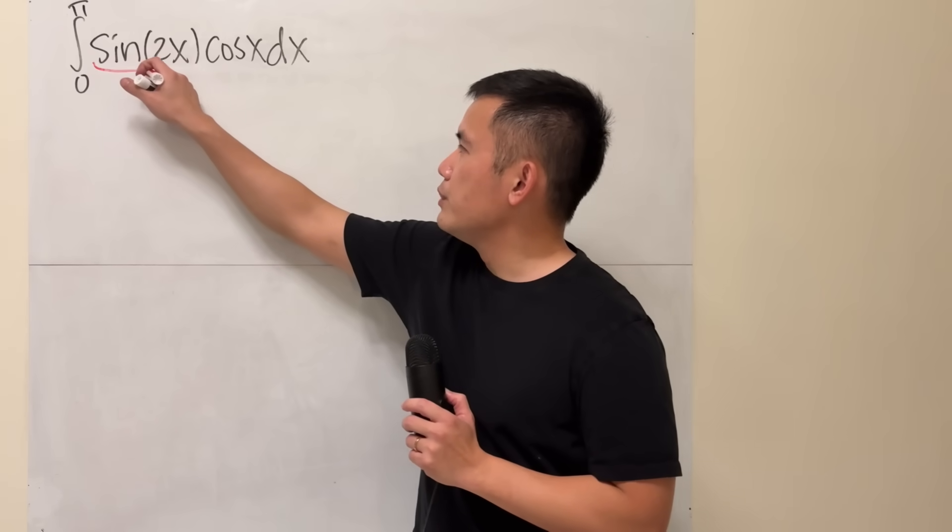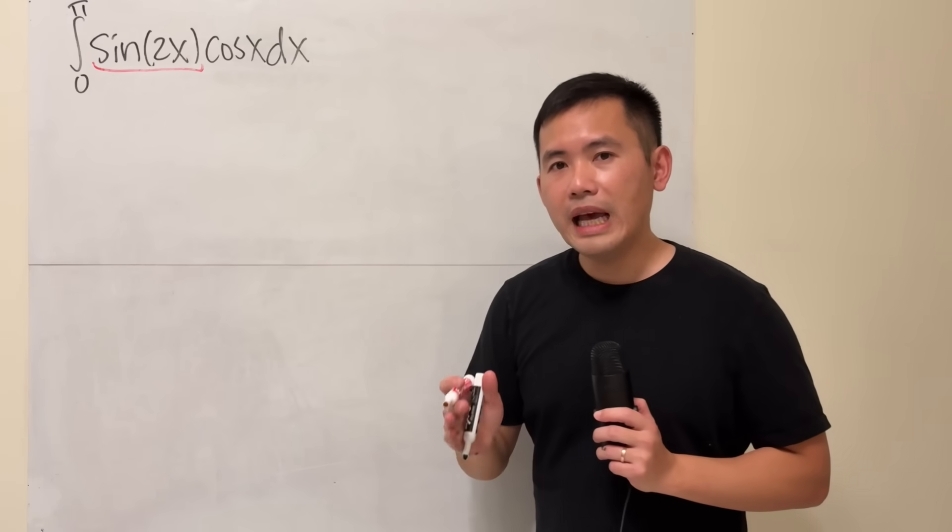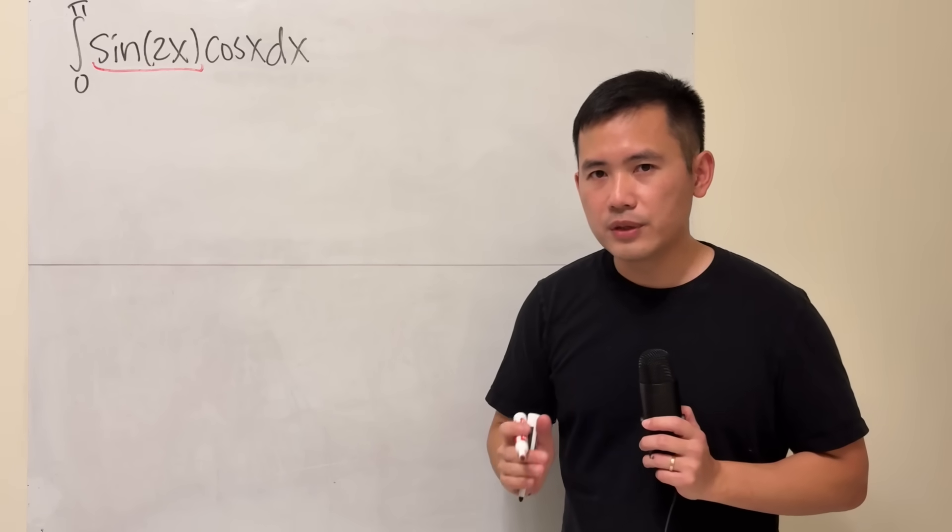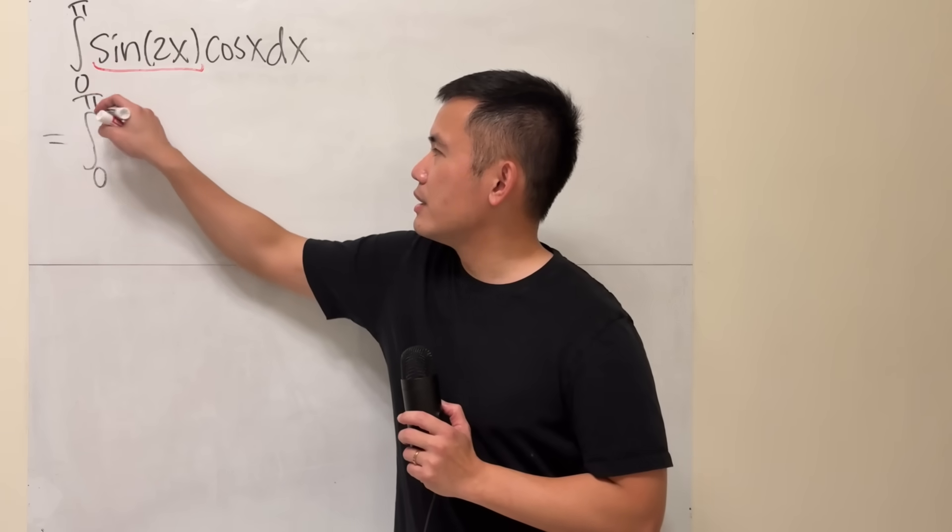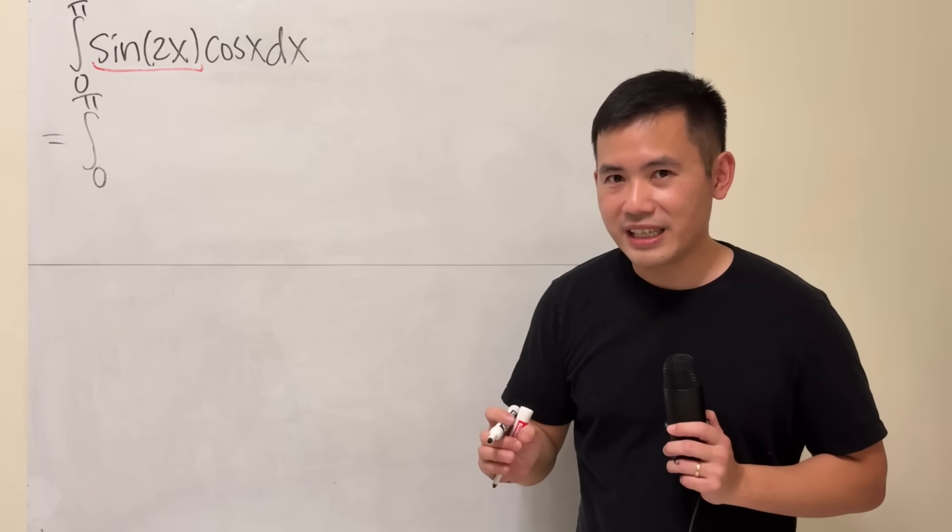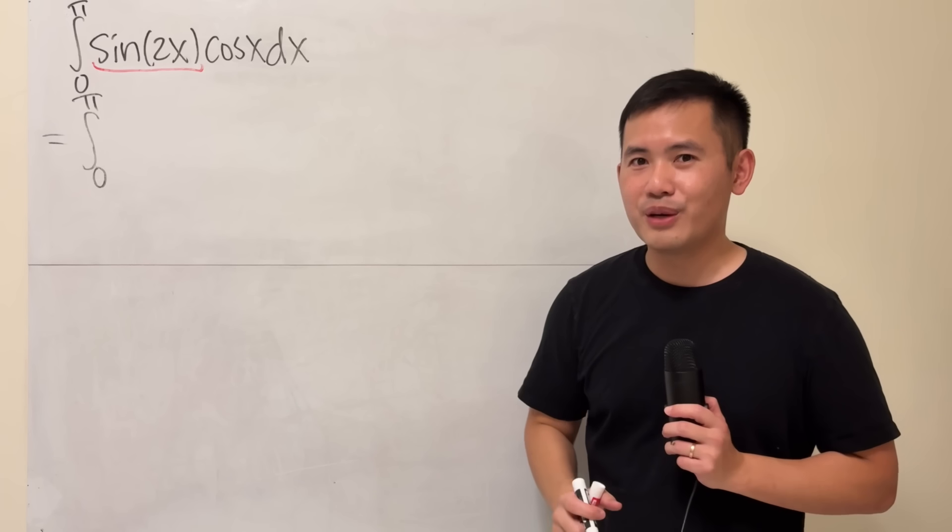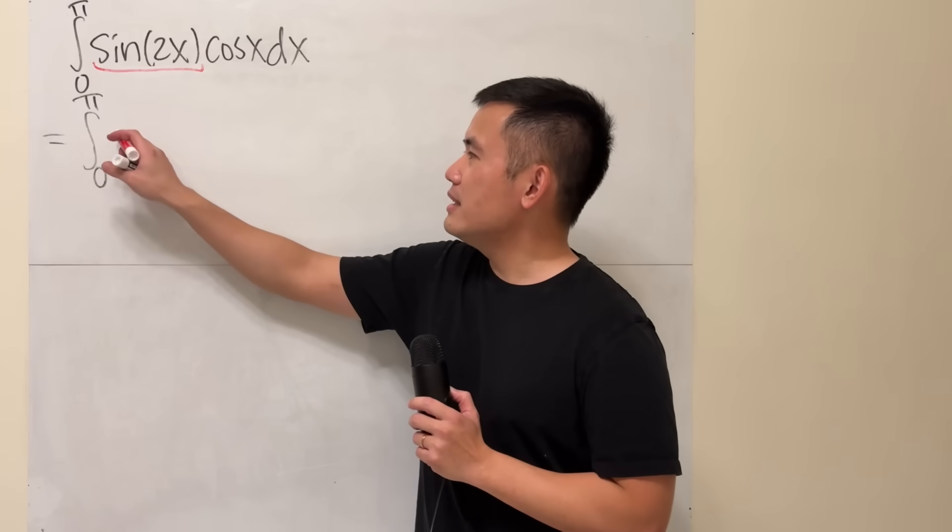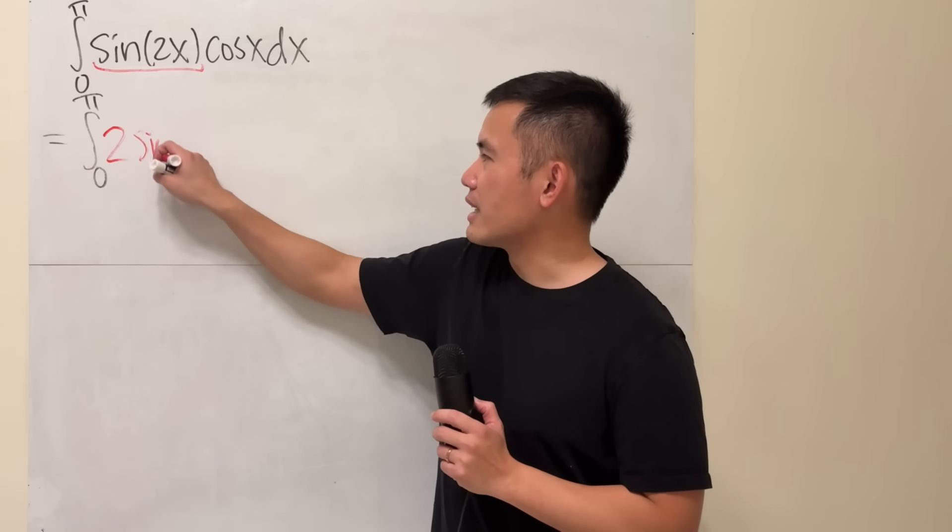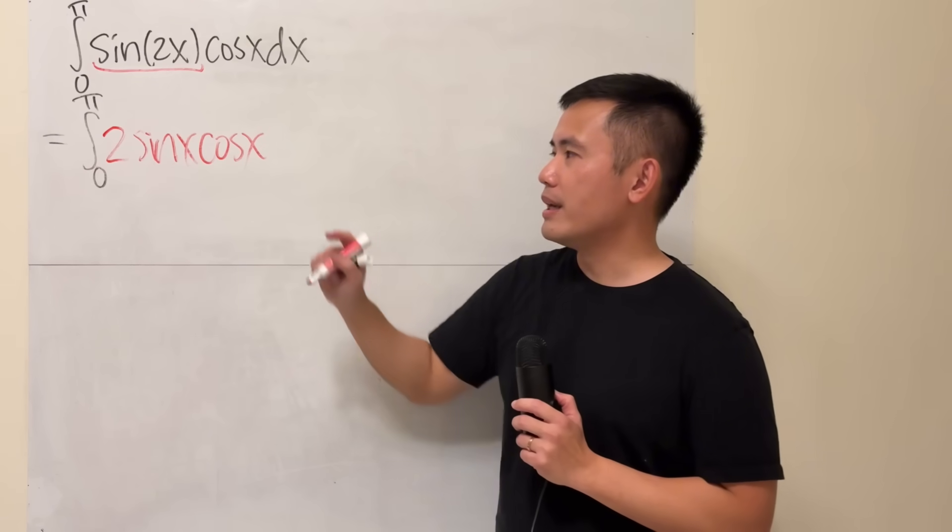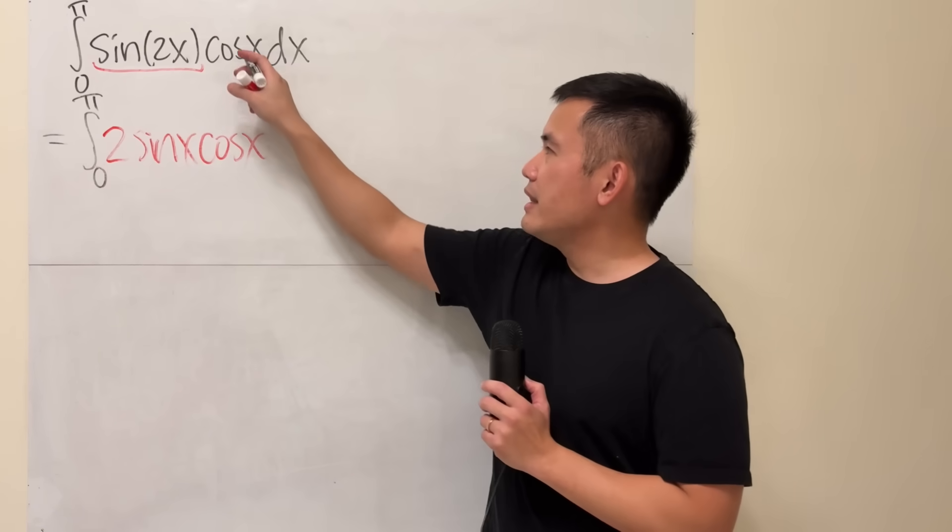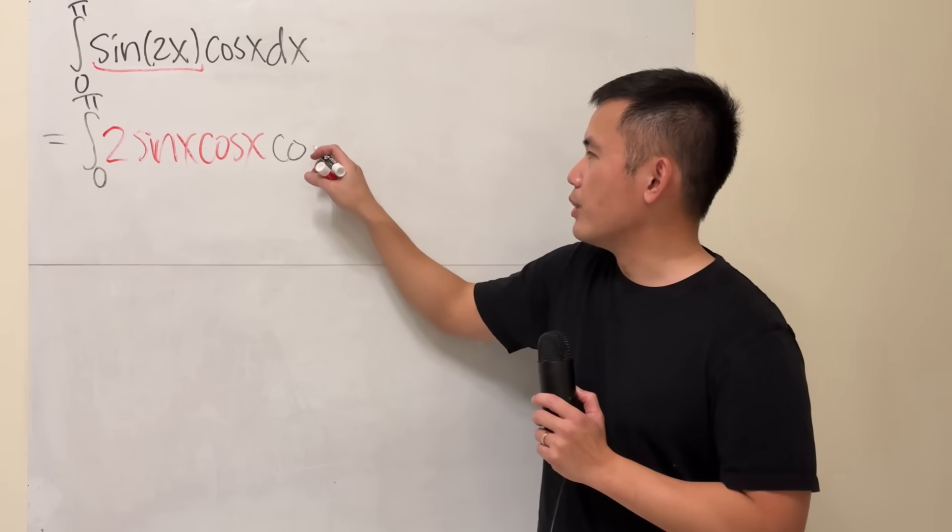Because first, if you look at sine of 2x, we have the double angle identity for sine. And yes, you will still have to remember a lot of the trig identities from your trig or pre-calculus class. Sine of 2x is equal to 2 times sine x times cosine x. That's just a double angle identity. And then you still have this cosine x.